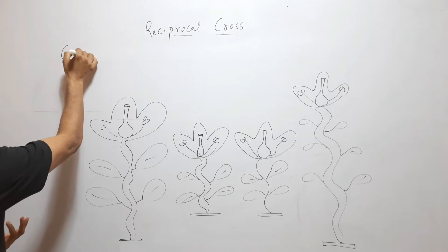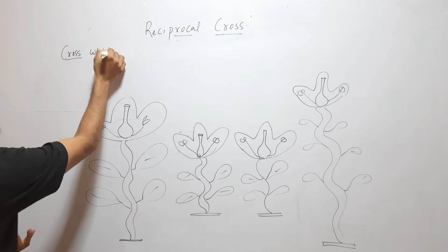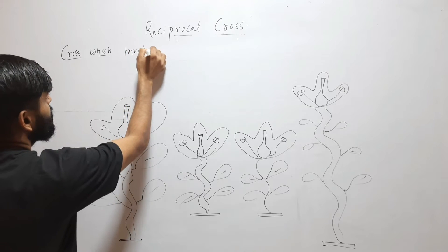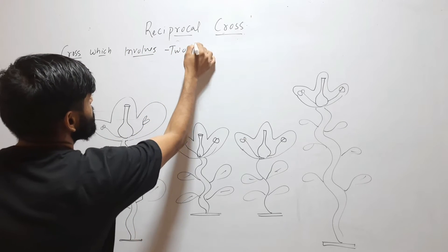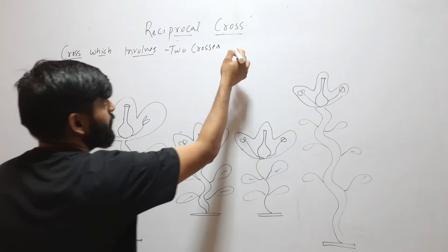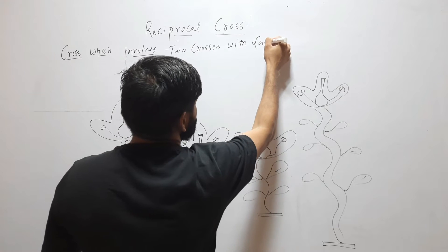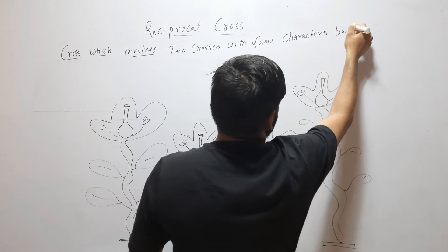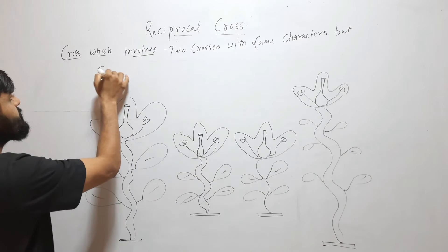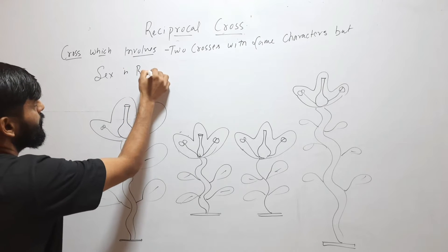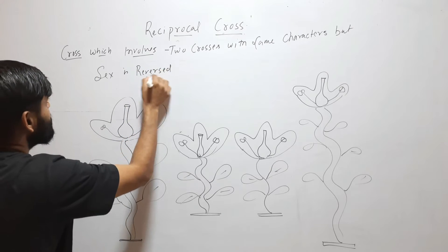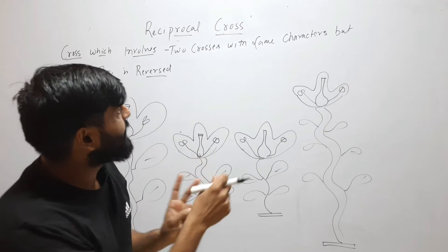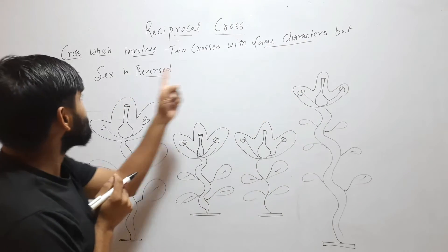Reciprocal Cross is a cross which involves two crosses with the same characters, but the sex is reversed. So Reciprocal Cross involves two different crosses, and both of these crosses will have the same characters, but the sex is reversed.